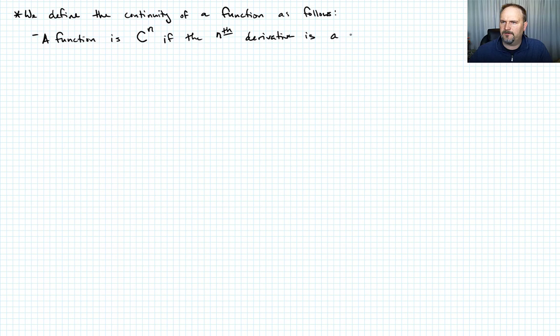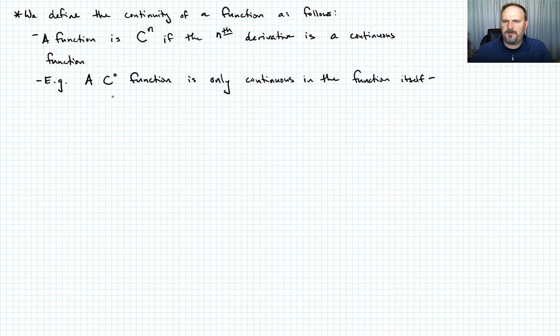I want to make a final comment about how we denote continuity. We say that a function is C^n if the nth derivative is a continuous function. For example, a C^0 function is only continuous in the function itself - its derivatives are only at most piecewise continuous.